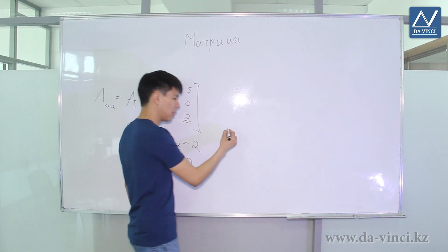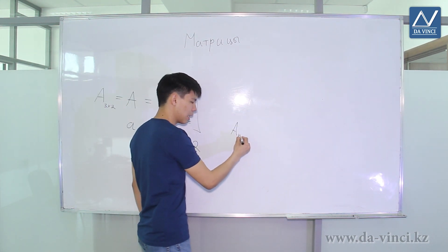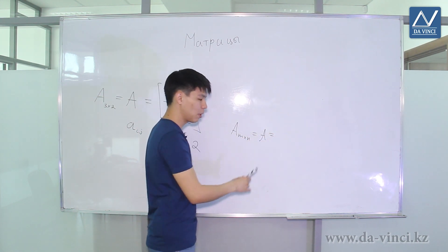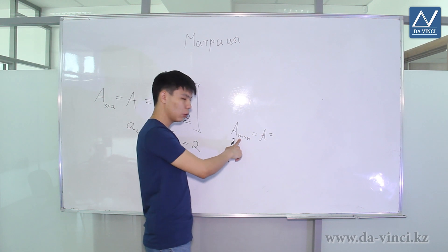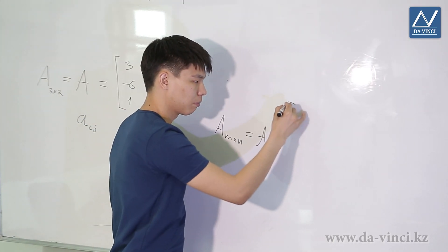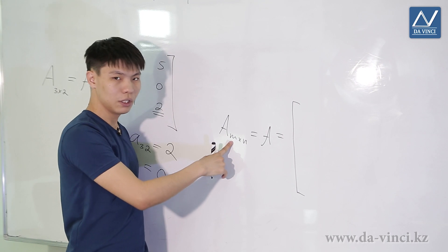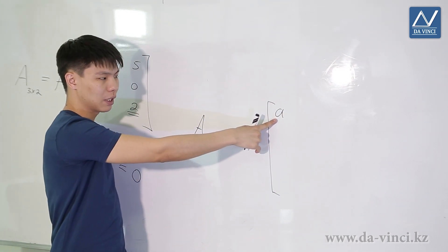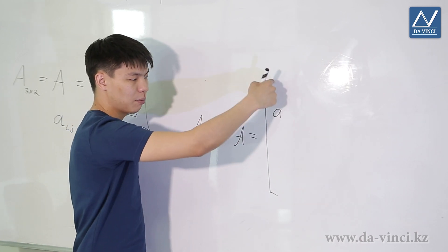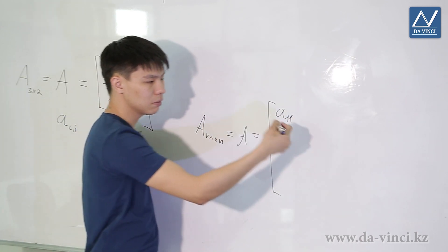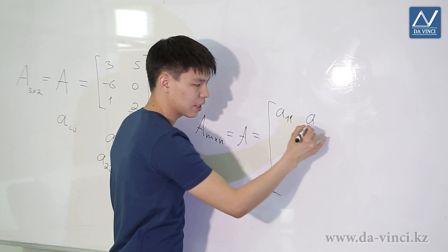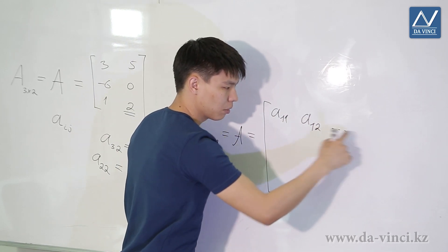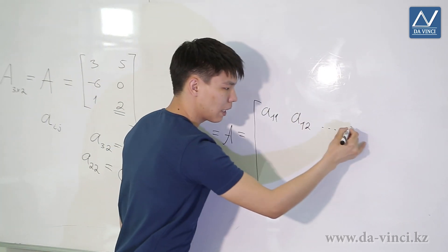In the general case, matrix A with size M by N is a rectangular table of numbers which contains M rows and N columns. Its element is A_{i,j}. The first element is in the first row and first column: A_{1,1}. The next element in the first row but second column: A_{1,2}. And so on — the last element in that row is A_{1,N}, because we have N columns.